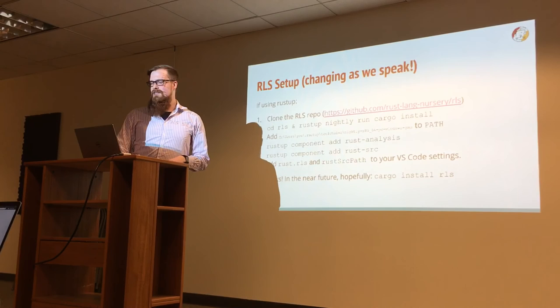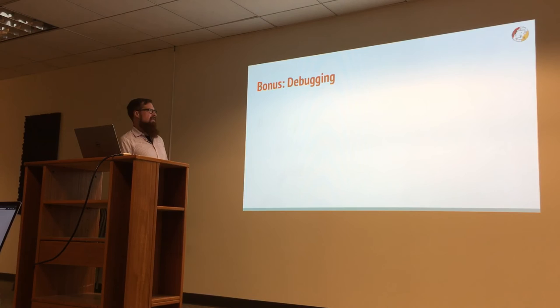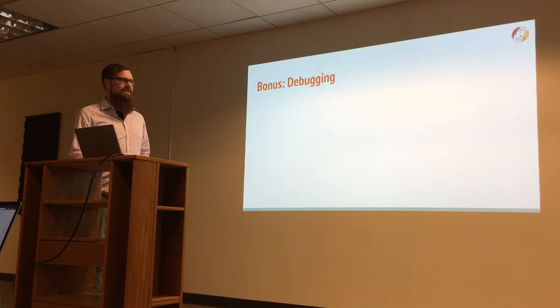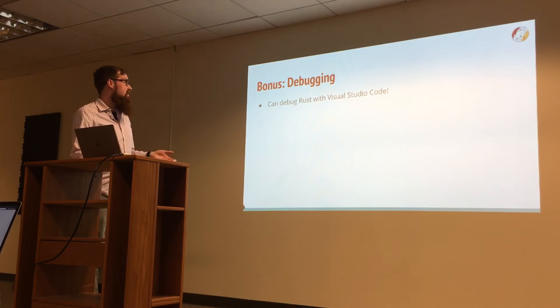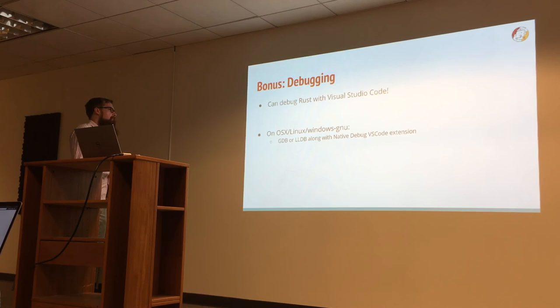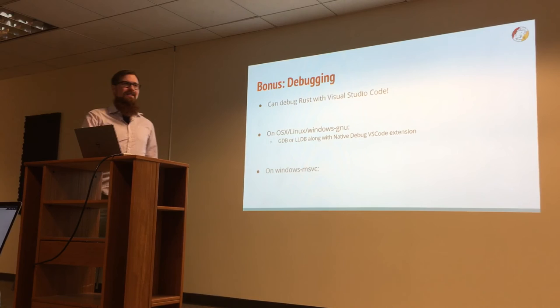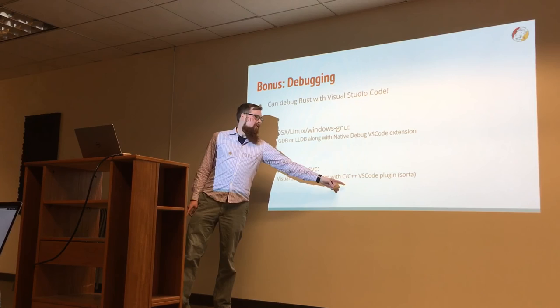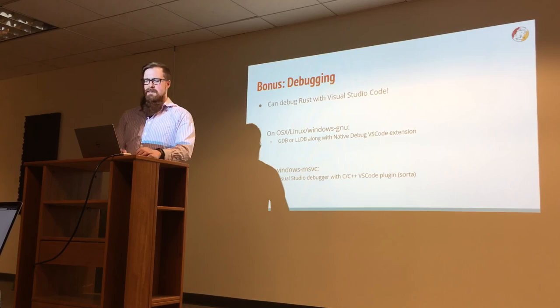The other nice thing in Visual Studio Code is I've finally been able to get an interactive debugger with Rust. I know you could have used GDB or LLDB with Rust in the past, but who wants to do command line debugging? You can actually debug Rust interactively with Visual Studio Code. If you're on OSX or Linux using the GNU toolchain, there's an extension called Native Debug. I'm on the MSVC toolchain, so I can use the native Visual Studio Code C++ plugin.